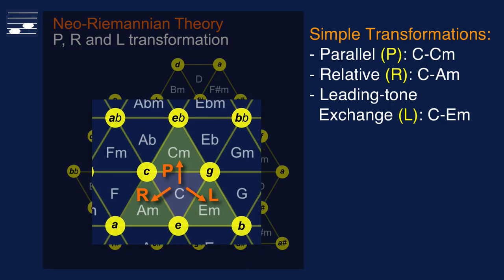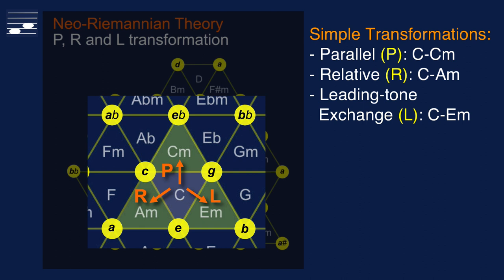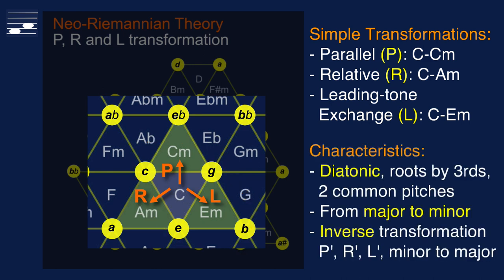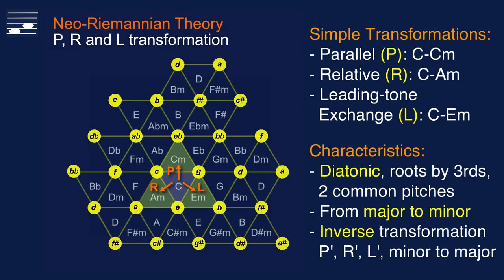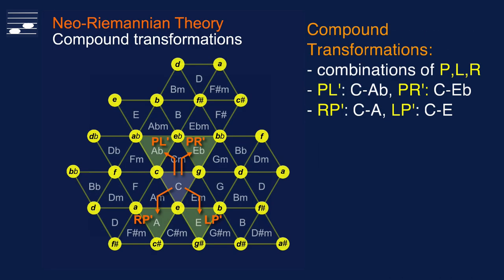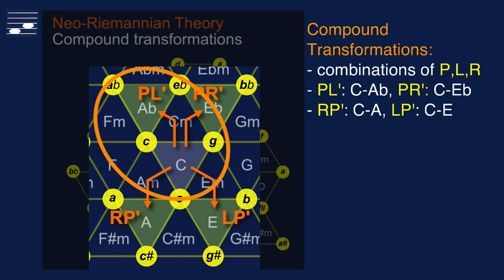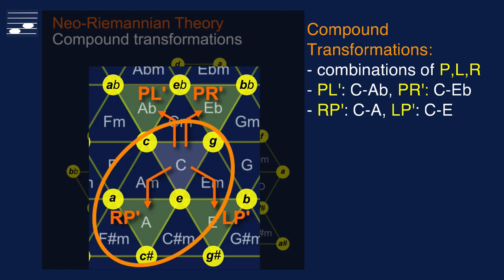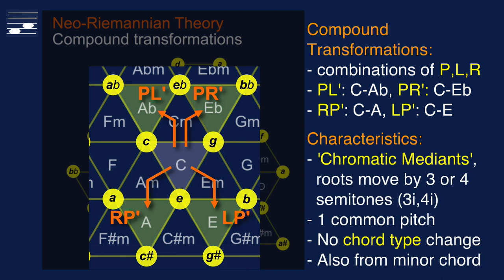When connecting triads, we discern three elementary Riemann transformations: parallel, relative, and leading tone exchange. These involve diatonic root movement and two common nodes between triads. The chord type changes from major to minor or the reverse. The triad type does not change for compound Riemannian transformations — a pairwise combination of the simple P, L and R operations — for which the roots move by either three or four semitones. The triad combinations are called chromatic medians, since they do not occur in diatonic scales, and the two triads share one common node.